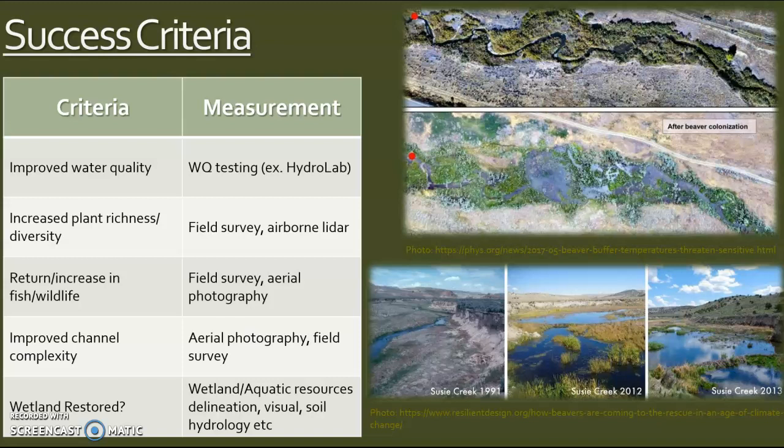To gauge whether or not these methods or this plan is successful, I've listed out some criteria and how you could measure them. One thing discussed earlier is improved water quality, which you would measure using water quality testing with something like a HydroLab or by getting water samples. Success would also mean increased plant richness and diversity, which you could assess through field surveys where you count species, or using something like airborne LiDAR, which has been really helpful to estimate that. Another success criterion would be the return and increase of fish and wildlife species — again, that could be a field survey or aerial photography — to know what is or isn't there, what has returned, and how much.